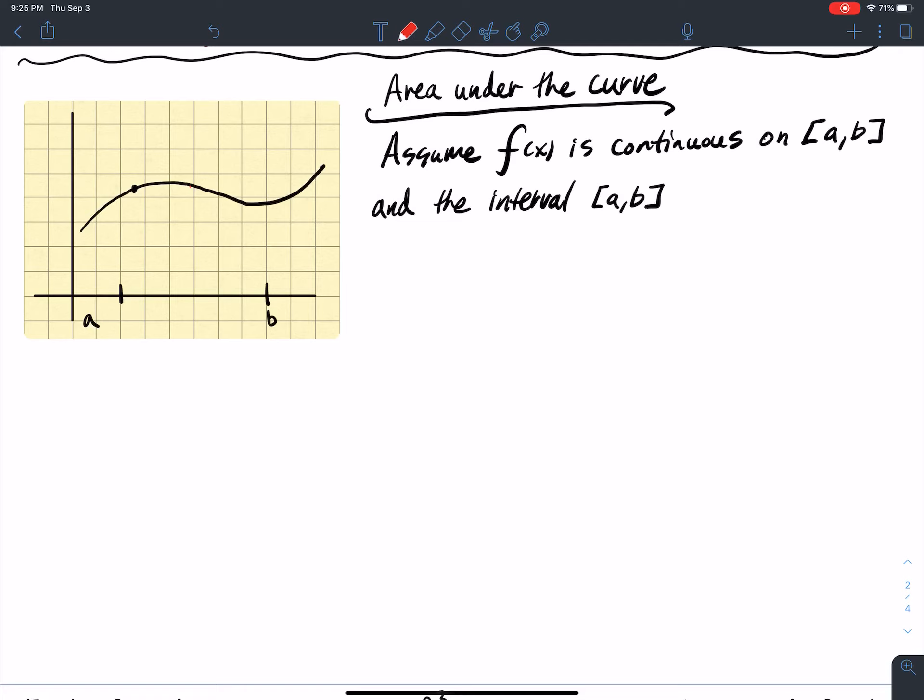So the area under the curve, I assume that f is continuous on [a,b], which it happens to be for this picture, closed interval a to b. And the interval, so we're talking about everything from here to here. Area under the curve is this area right here between the graph of f and the x-axis.